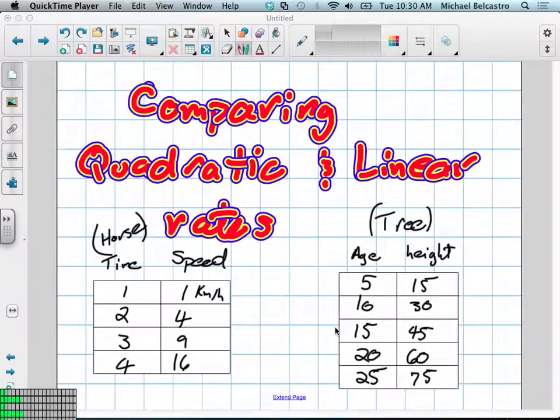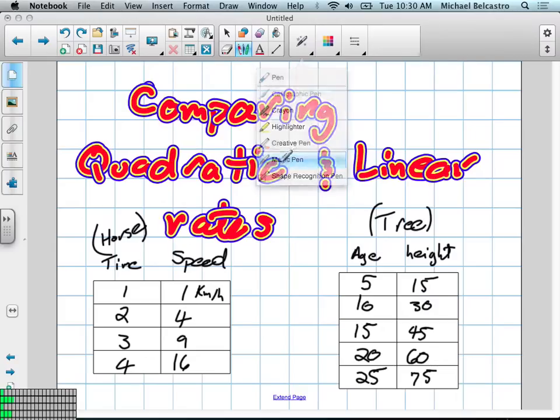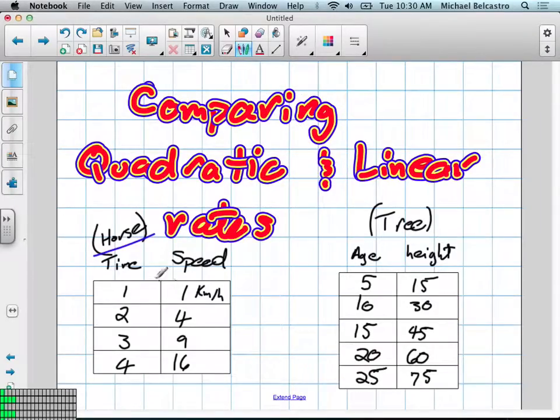Okay, so the very first question of today is comparing quadratic and linear rates. We have rates here, in fact we have two of them. One of them has to do with the speed of a horse. So this horse is running at one second, it's going one kilometer an hour. At two seconds, four. At three seconds, nine. At four seconds, 16 kilometers an hour.